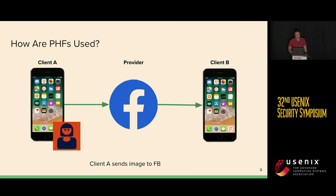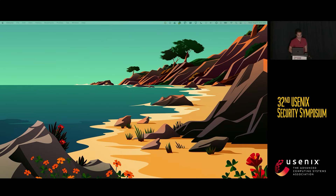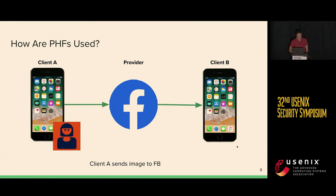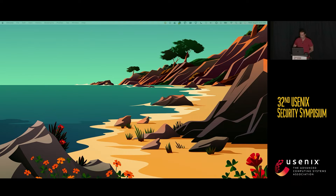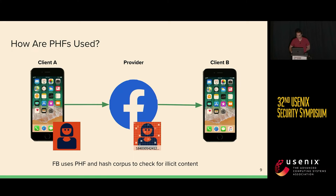So how are these things used? Suppose that we have some client that wants to send an image from their device over to another device, and in this scenario they are using Facebook Messenger. They'll send that image off to Facebook, and Facebook will use some media hashing algorithm to basically check the output to see if it matches against a corpus of known illicit hashes. Those known hashes would be obtained from organizations such as the National Center for Missing and Exploited Children. This is used in an attempt to filter out content such as child sexual assault material or revenge porn from the platform.